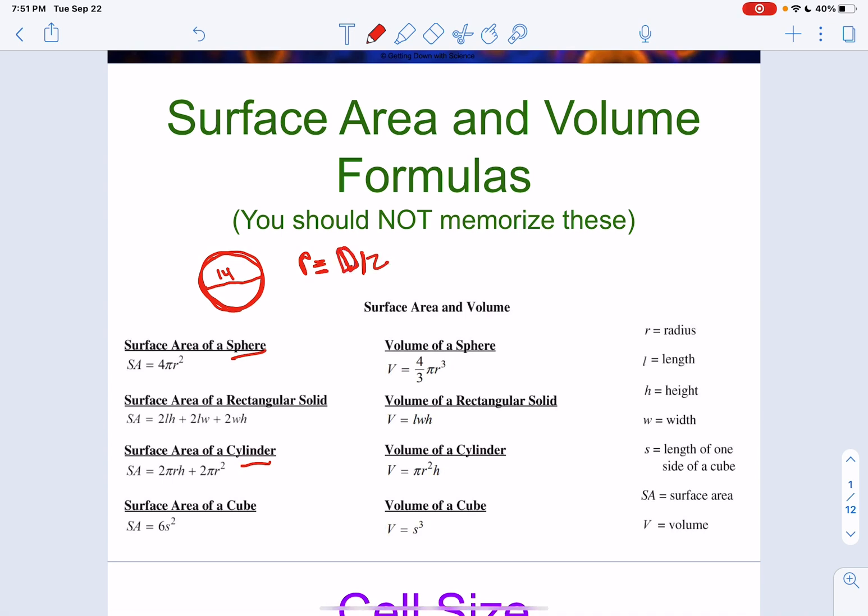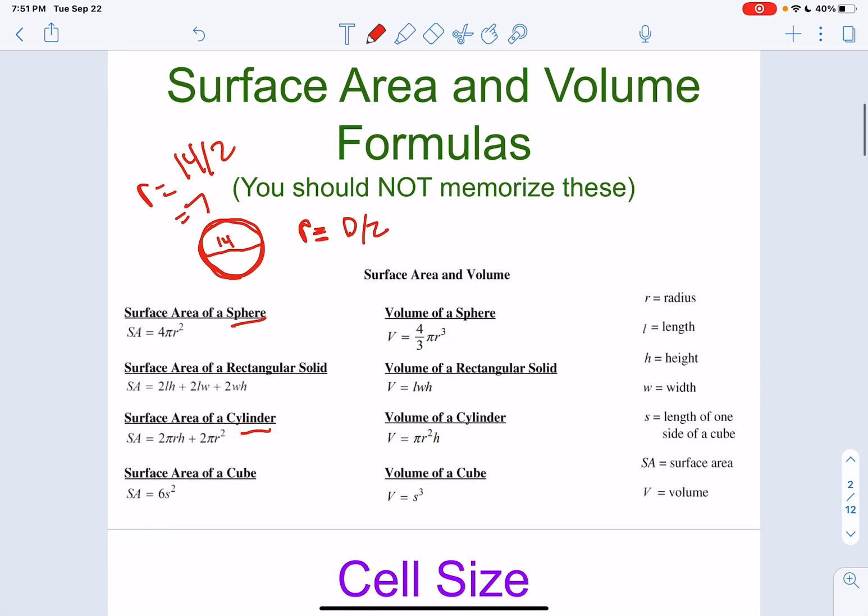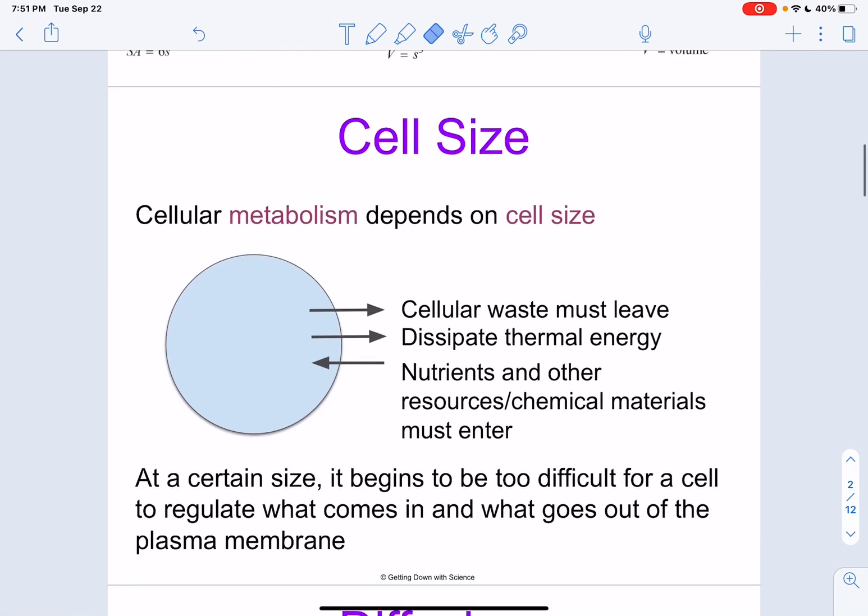In this case, radius will equal 14 divided by 2, which will equal 7. Pretty easy. But for the rest of these formulas, you do not need to memorize them. This will be given to you on the exam.